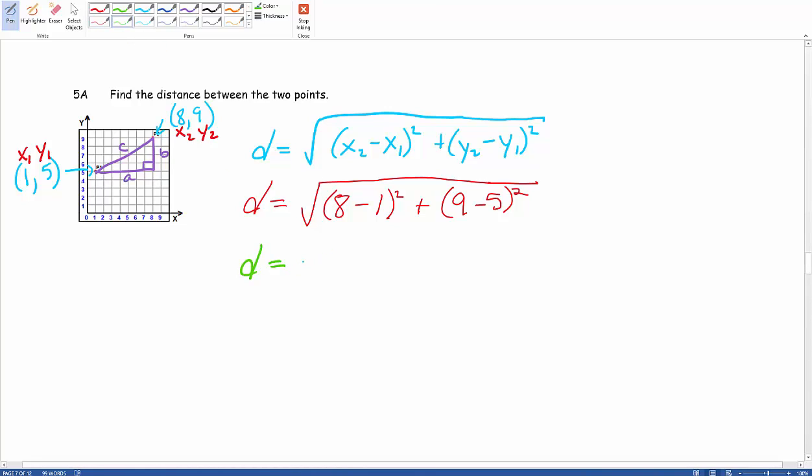So our distance equals the square root of: 8 minus 1 is 7, squared, plus 9 minus 5 is 4, squared.